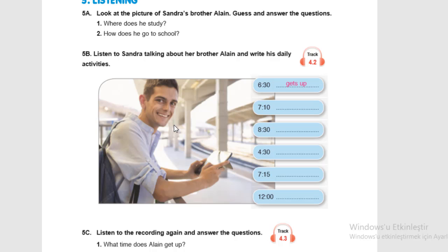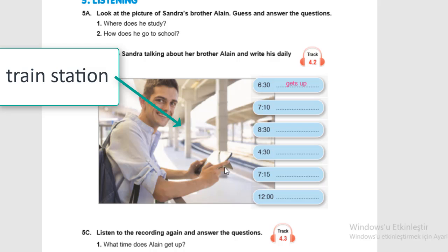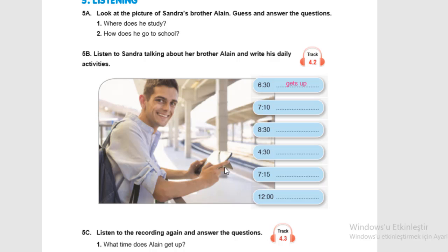How does he go to school? When you find the answer — he is in the train station, obviously. Train station. So he goes to school by train. Perfect.